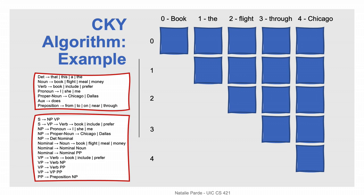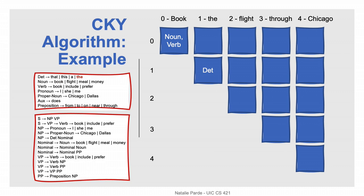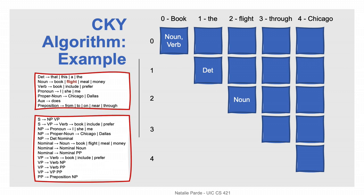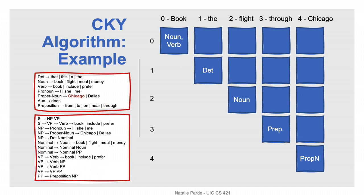We start with the first row and first column, which just represents the single word span 'book.' It looks like we can match that in our lexicon as a noun or a verb. We're working from the bottom up, moving onwards along the diagonal. The next cell represents the single word span 'the' — we find a match as a determiner. We move on to 'flight' and find a match as a noun, 'through' as a preposition, and 'Chicago' as a proper noun. We've now filled in our entire diagonal, giving us one or more part-of-speech labels for each word.